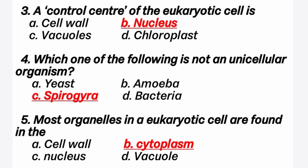Fifth question: most organelles in a eukaryotic cell are found in the dash. Answer is B option, cytoplasm. Many organelles are found in the cytoplasm of the cells. The cell organelles are: nucleus, ribosomes, endoplasmic reticulum, Golgi bodies, lysosome, vacuole, mitochondria, etc.